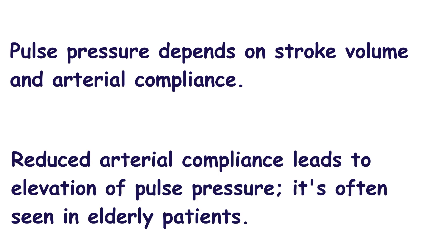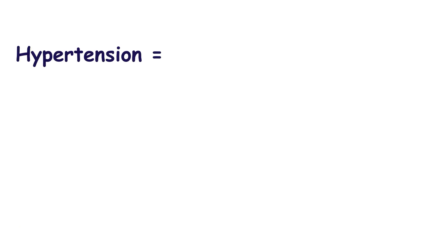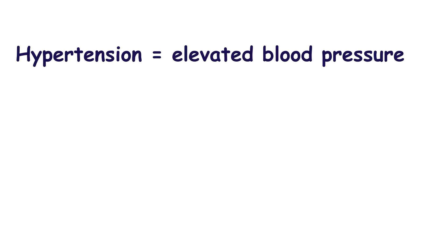Pulse pressure depends on the interaction of stroke volume and the ability of arteries to expand, also called compliance. Reduced arterial compliance causes elevation of the pulse pressure, which is often found in elderly patients. Now, having discussed the physiology of blood pressure, let's talk about hypertension, also known as high blood pressure.